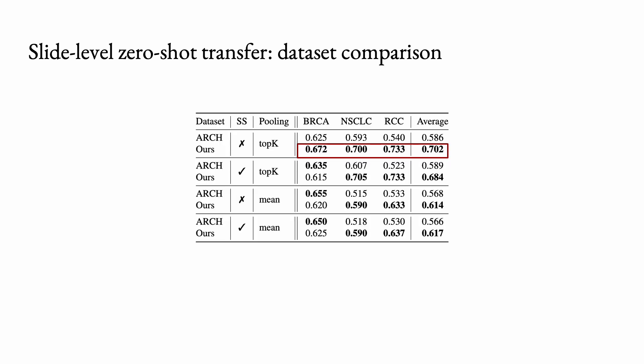To assess the added value of the pre-training dataset, we trained our best performing model configuration on our full training dataset of 33k pairs and compared it to training only on ARCH, which is a subset of our training data with 7.5k pairs. We find that for all pooling methods, training on our full dataset performs better than training on only ARCH on average over 3 tasks.